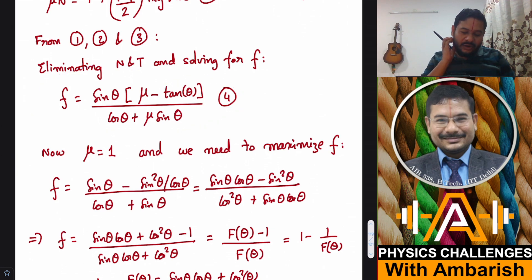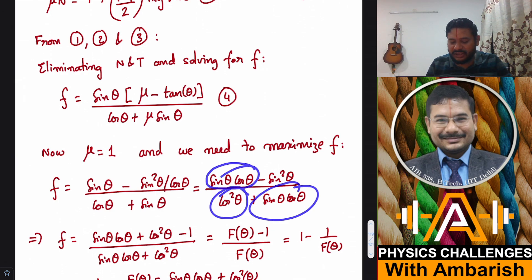Now I can put mu equal to 1 in this, and then some simplification. If you put mu equal to 1, this becomes 1 minus tan theta. You multiply sin theta inside, so this becomes sin theta minus sin square theta upon cos theta, and this is cos theta plus sin theta in the denominator. Multiply denominator and numerator by cos theta. Denominator becomes cos square theta plus sin theta cos theta, and numerator is sin theta cos theta minus sin square theta.